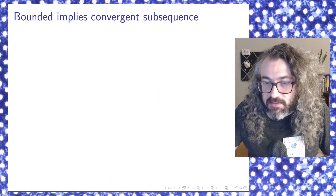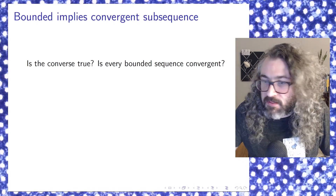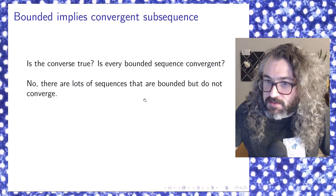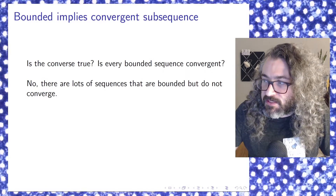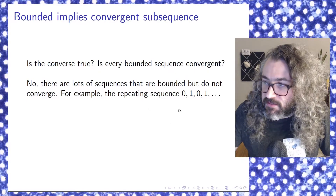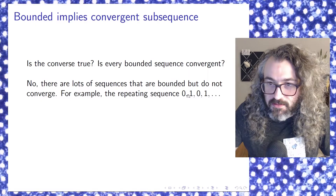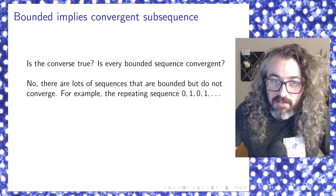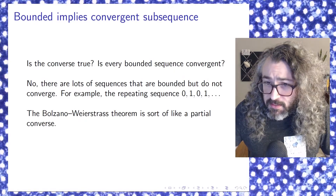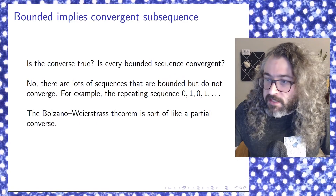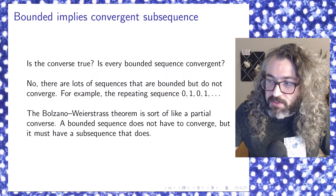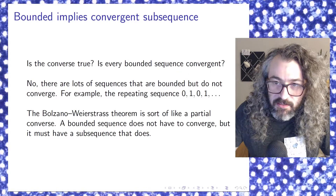So how else do these ideas fit together? Is the converse true — is every bounded sequence convergent? The answer to that is no. There are lots of sequences that are bounded but do not converge. The easiest example is the repeating sequence that just goes 0, 1, 0, 1, 0, 1, and keeps repeating like that forever. It is bounded, but it does not converge. So the Bolzano-Weierstrass theorem is sort of like a partial converse: a bounded sequence does not have to converge, but it must have a subsequence that does. That's what the theorem says.